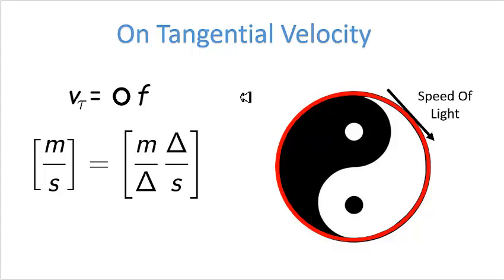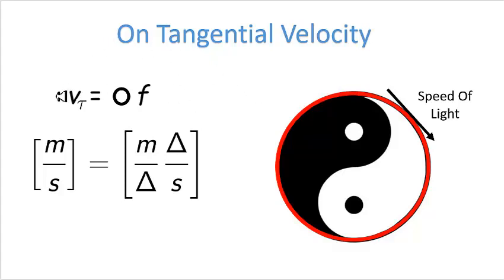This is a nice little learning tool — a nice simple representation of the tangential velocity of my ohm particle system. I'm using the circumference of the circle and the frequency in cycles per second, as I've always been trying to do. That's it for now — I will definitely be back. Ciao for now.